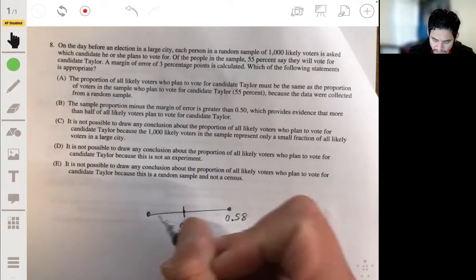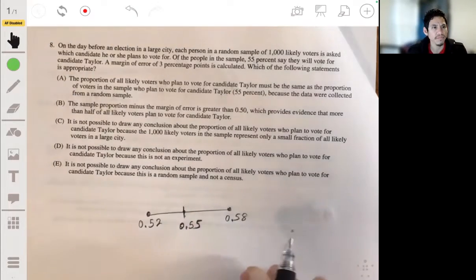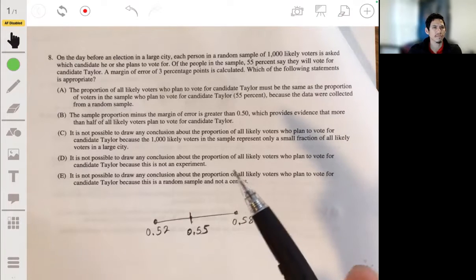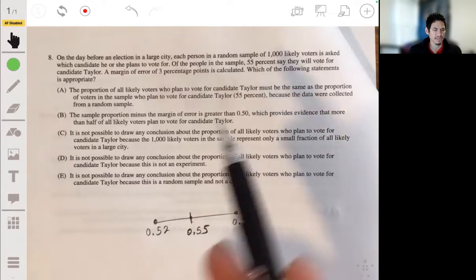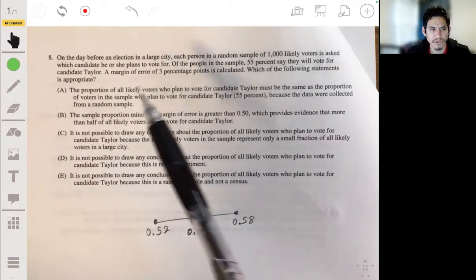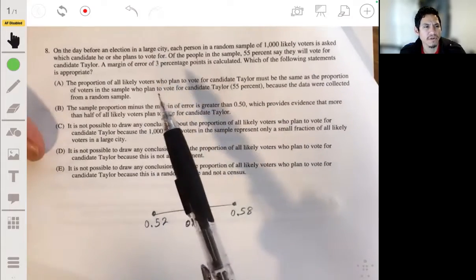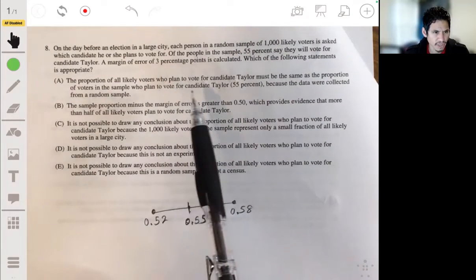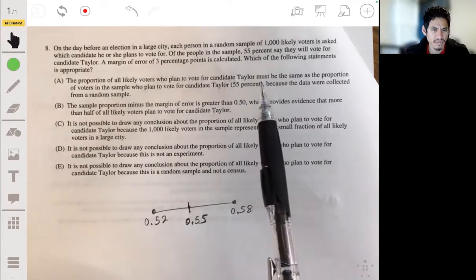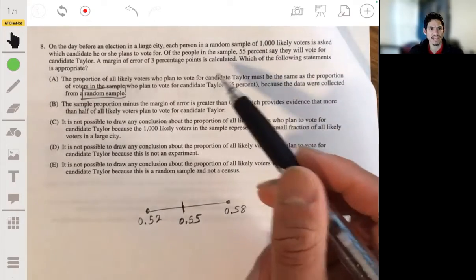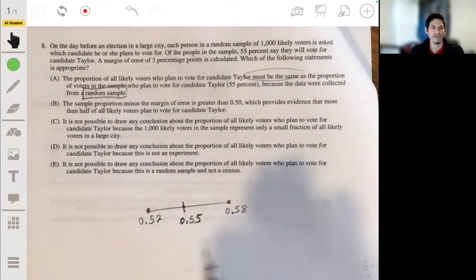So we can add three percentage points to this: 0.58, and take away three percentage points: 0.52. So this is essentially their confidence interval. It doesn't tell us the level of confidence, so I'm sure they're not getting at that. Let's go through each one. The proportion of all likely voters who plan to vote for candidate Taylor must be the same as the proportion of voters in the sample who plan to vote for candidate Taylor, which is 55%, because the data were collected from a random sample? Nope. I mean, it's possible that it could be, it's possible, but they're saying must be, has to be. This is just a sample. It could be close or it could be off by five percentage points. There's no guarantee. It's not A.